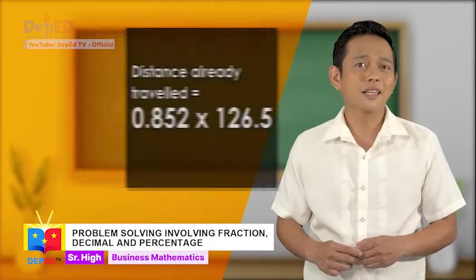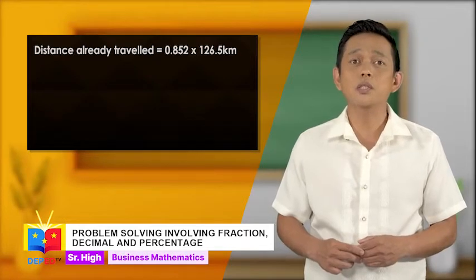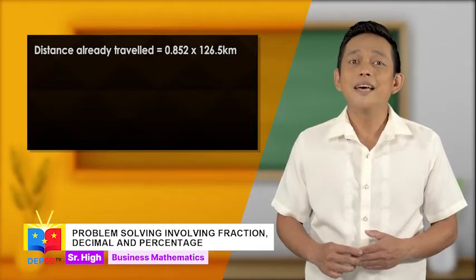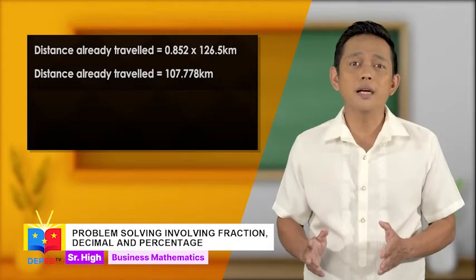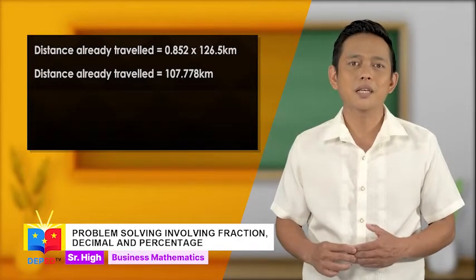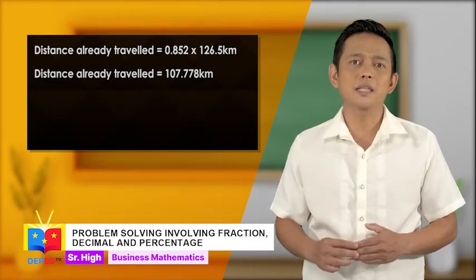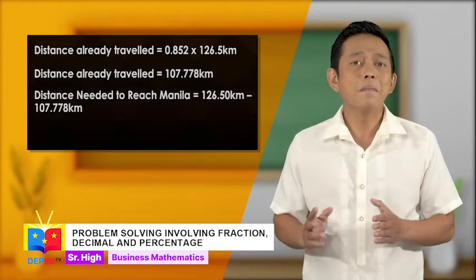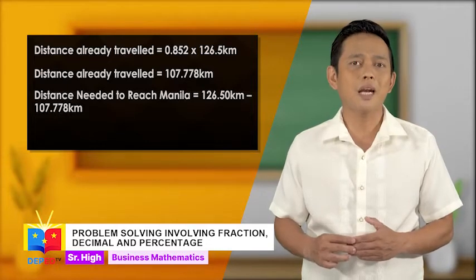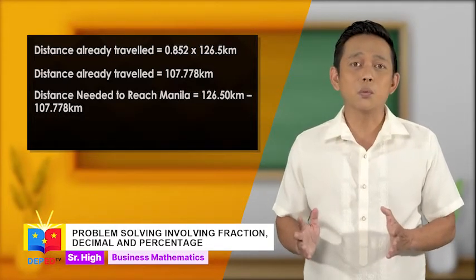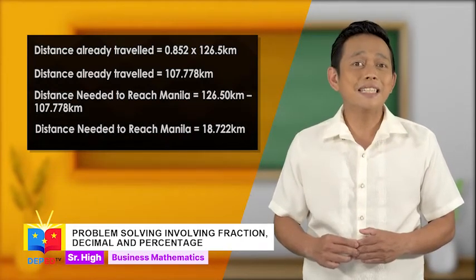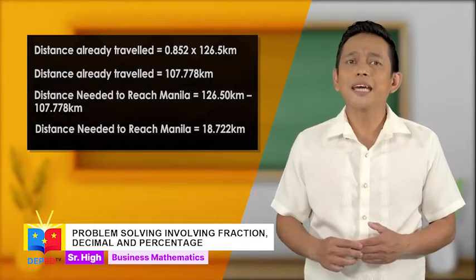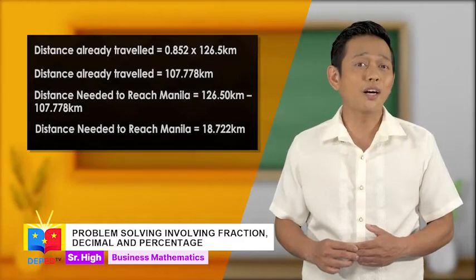Performing the indicated operation: distance already traveled equals 0.852 times 126.5 kilometers. By multiplying, distance already traveled equals 107.778 kilometers. Subtract the distance already traveled from the total distance. Distance needed to reach Manila equals 126.50 kilometers minus 107.778 kilometers. Getting the final answer: distance needed to reach Manila is equal to 18.722 kilometers. Therefore, Joy needs to travel 18.722 kilometers more to reach Manila.